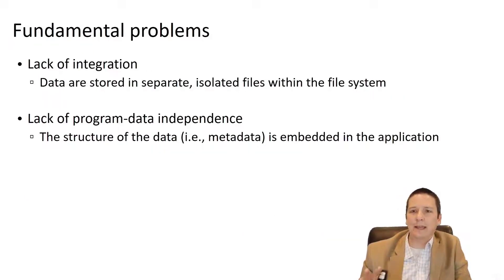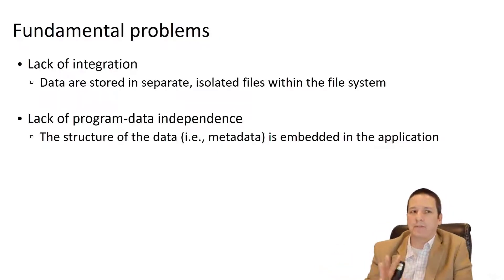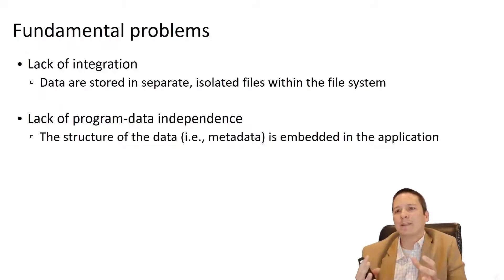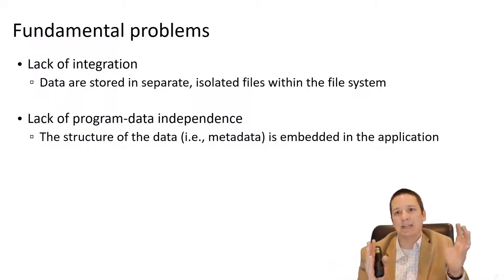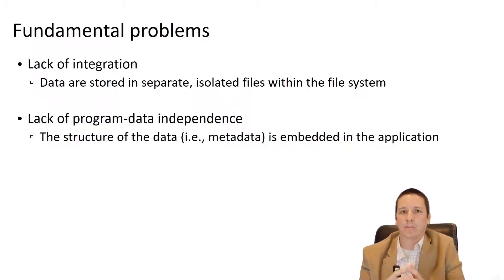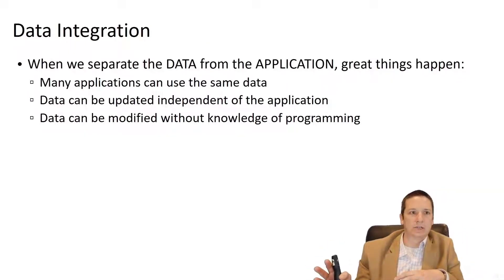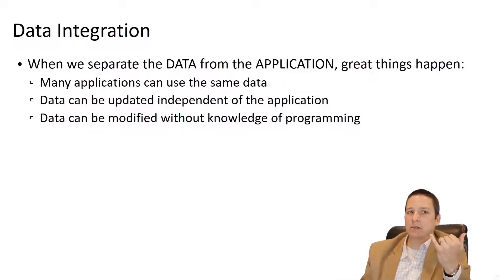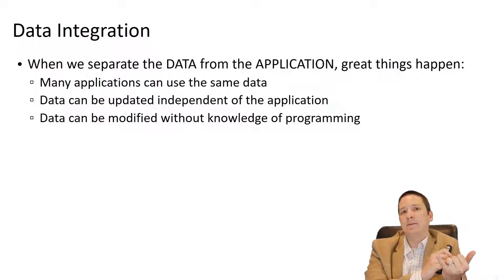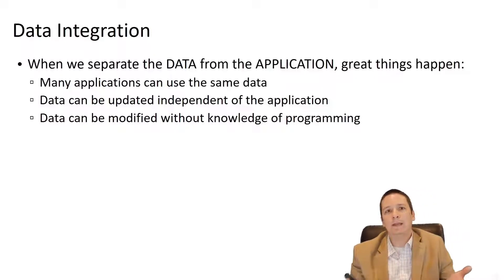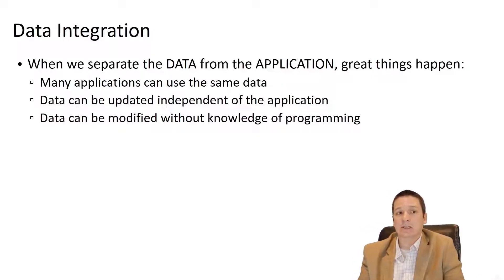These limitations all stem from two fundamental problems: a lack of data integration — the data are isolated from one another — and a lack of independence between the application and the data, as they are very tightly intertwined. When we separate the data from the application, we get great benefits: many applications can use one copy of the same data, the data can be updated independently of the application, and data structures can be modified without changing the application programming itself.